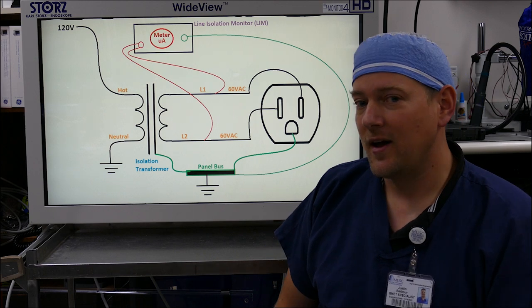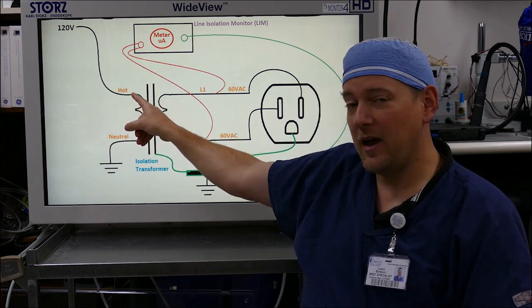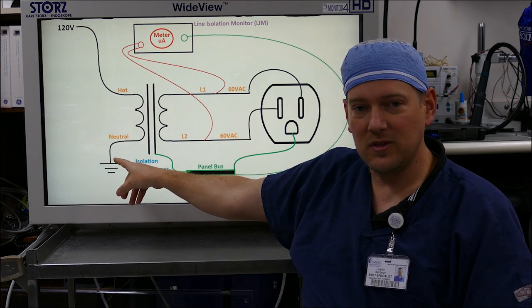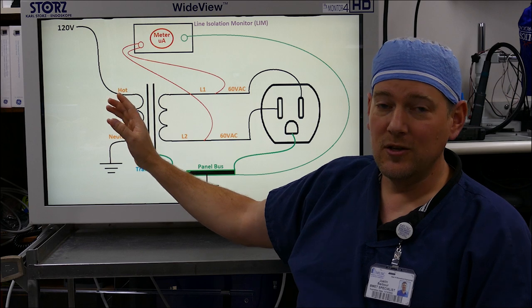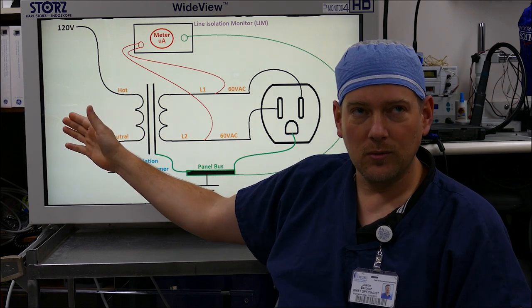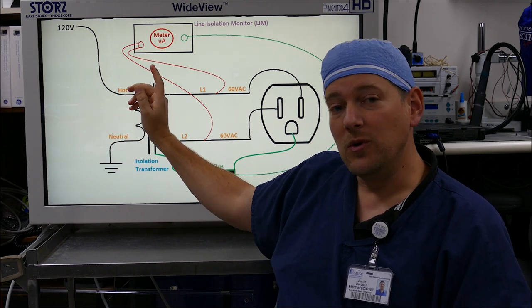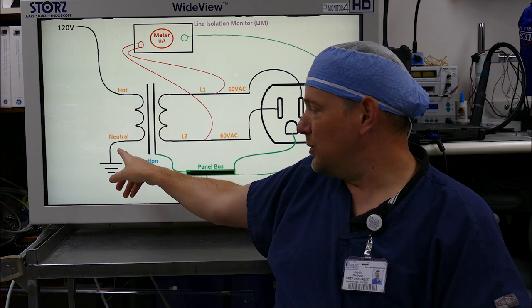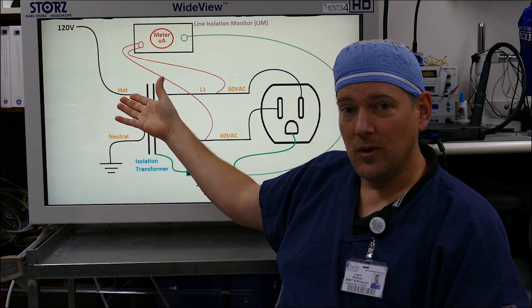So what we have over here on the left side of the diagram: you have 120 volts coming into the panel and you have neutral which is at the same potential as ground. Now in your normal house, that's your electrical. You have hot and neutral which is technically ground.